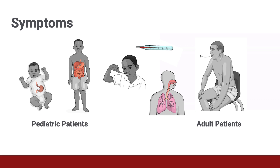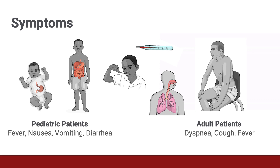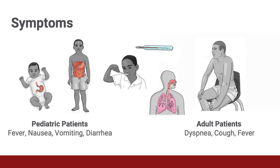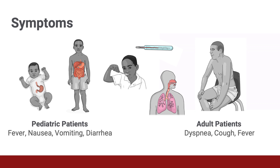However, some groups of children are at risk for severe symptoms, which may require admission for advanced interventions. When comparing adults and pediatric patients, adults are more likely to suffer from stereotypical symptoms of shortness of breath, cough, and fever — predominantly respiratory symptoms. In contrast, kids are more likely to present with fever and GI symptoms. These GI symptoms, including nausea, vomiting, diarrhea, and abdominal pain, can be particularly bad and may be mistaken for appendicitis or other common abdominal pathologies in children.